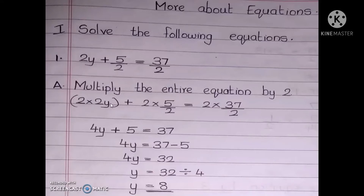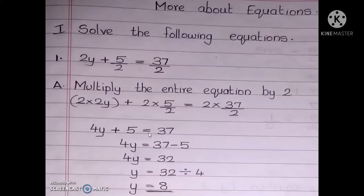What is 2 into 2y? It is 4y. Here you can see 2 in the numerator and 2 in the denominator, so you can cancel them. 2 and 2 get cancelled, so what is remaining? 5. Similarly, here also 2 is in the numerator and 2 is in the denominator, so you cancel. What is remaining? 37. So the final equation you get is 4y plus 5 equal to 37.